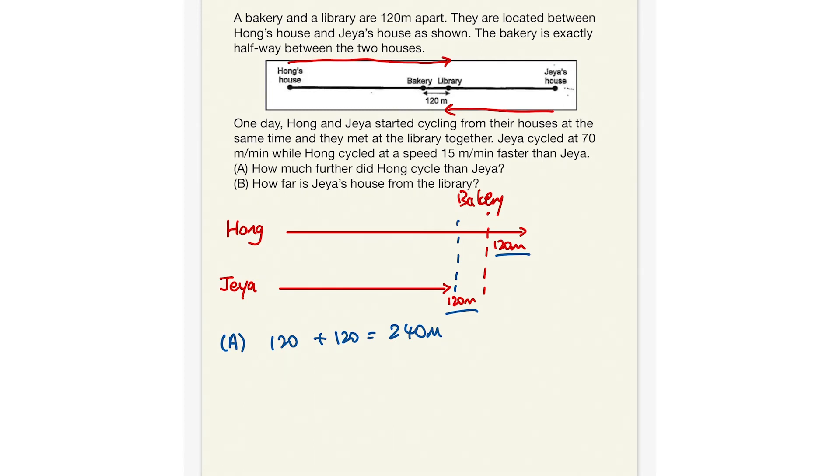And now, we also notice the second part. So we see that Hong cycled at the speed 15 meters per minute faster than Jaya, which means every minute, he'll be traveling 15 meters more. Now, you notice at the very end, he actually traveled an extra 240 meters as compared to Jaya. So how long did they cycle for in order for Hong to travel a total of 240 meters ahead of Jaya? So in part B, what do we need to do?